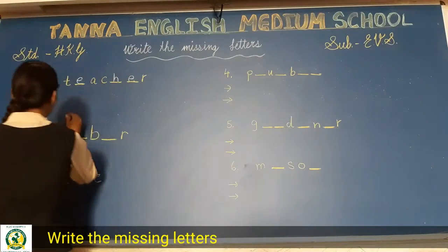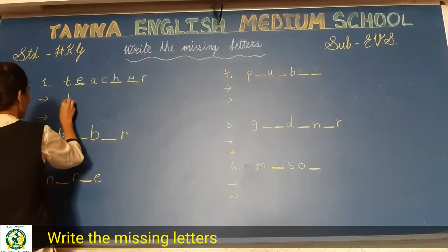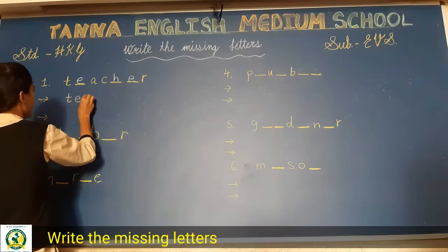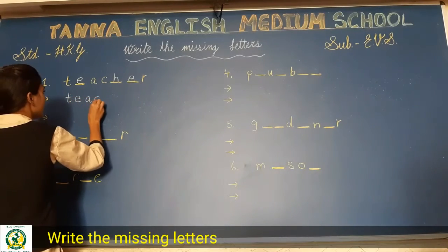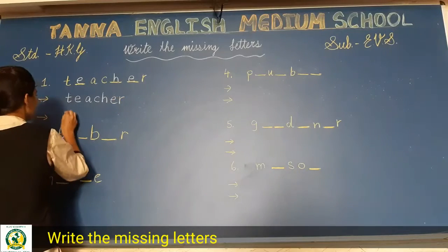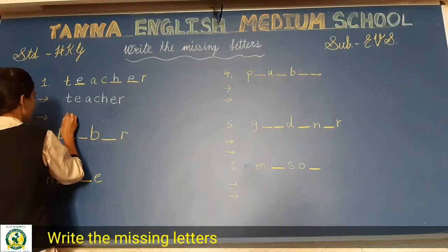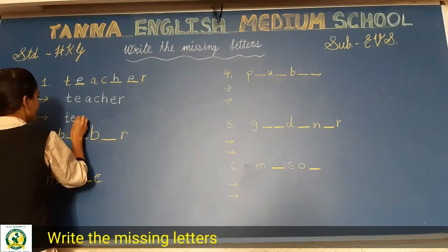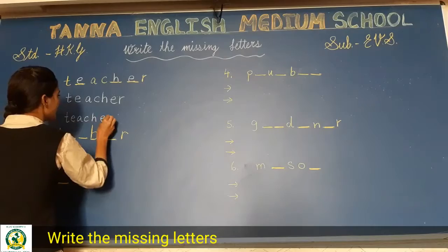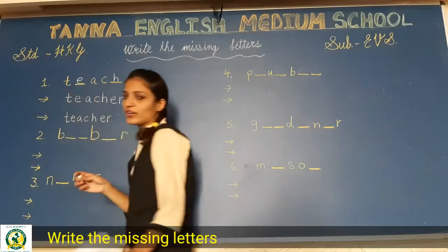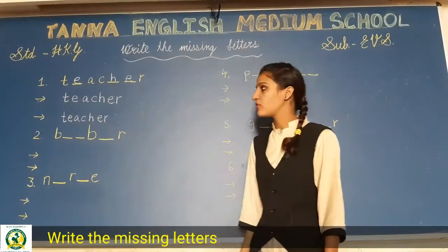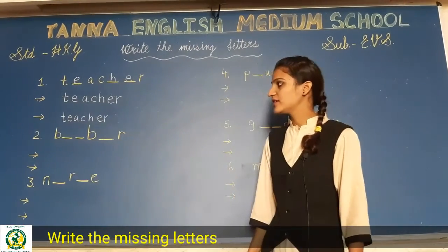और जो नीचे दो arrows दिए हैं, वहाँ पर spelling read करके लिखना है, बोल-बोल के। T-E-A-C-H-E-R, teacher. बार-बार आपको बोलना है ताकि आपको आ जाए।